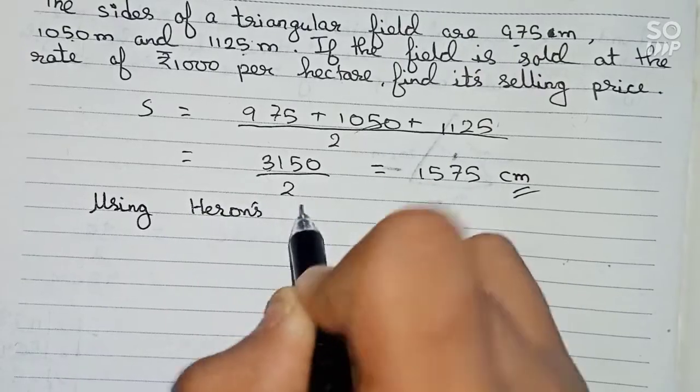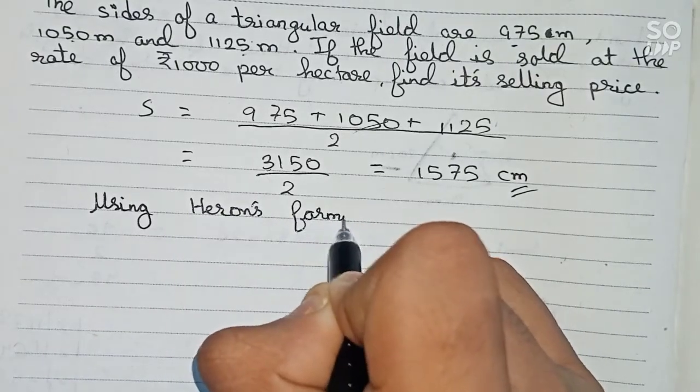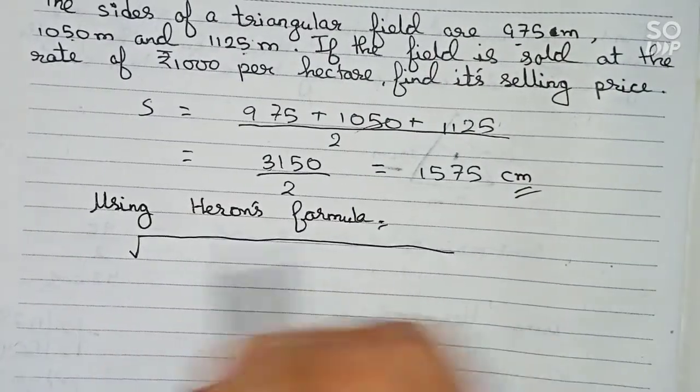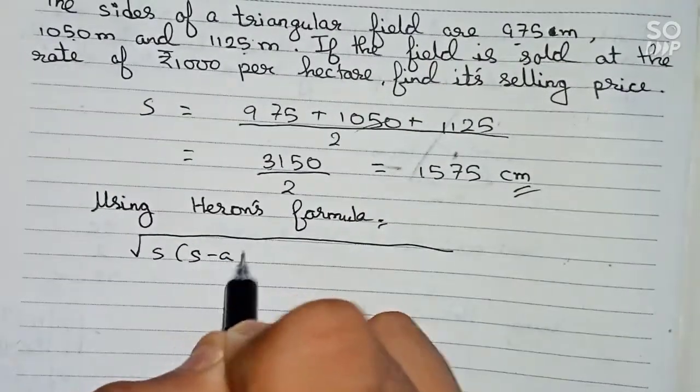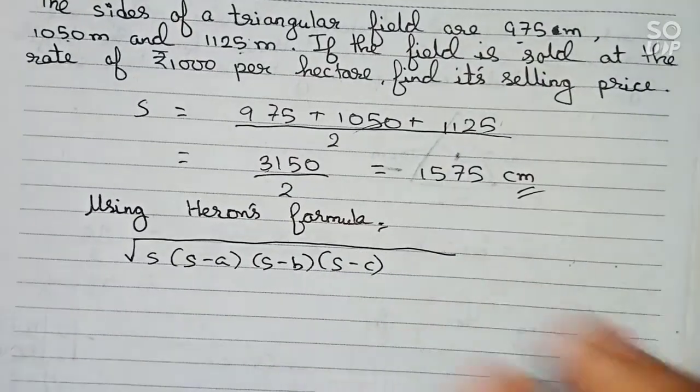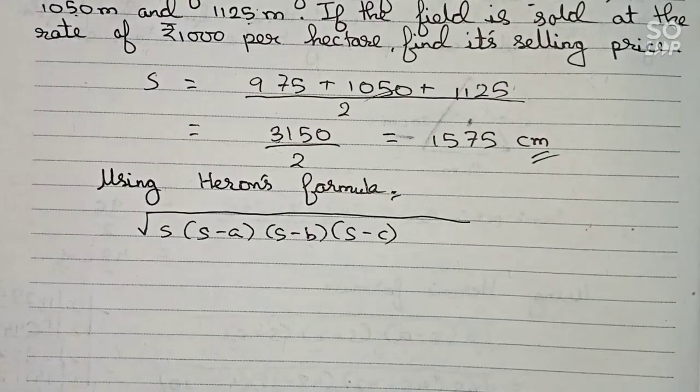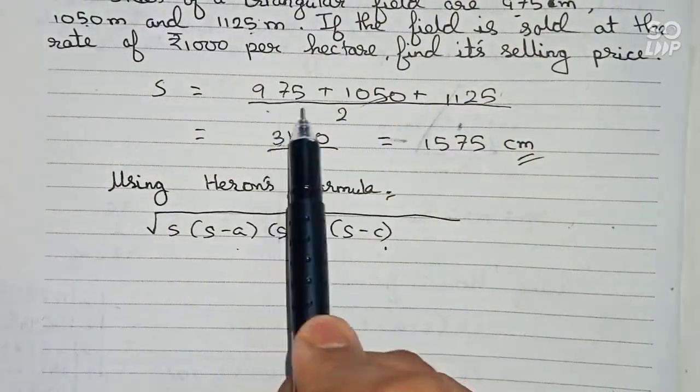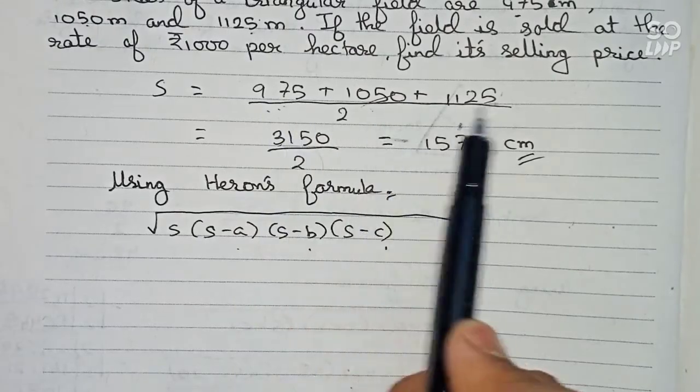So now, using Heron's formula we will find out the area. So Heron's formula says that root over s times (s minus a) multiplied by (s minus b) multiplied by (s minus c) will be equal to the area of the triangle. Here a, b and c will be the three sides: 975, 1050 and 1125.